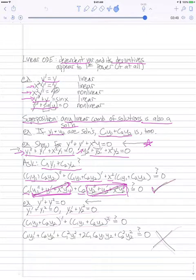We can quickly show that this doesn't work for a nonlinear equation. So take y prime plus y squared equals 0, and take two solutions, y1 prime plus y1 squared equals 0, y2 prime plus y2 squared equals 0.